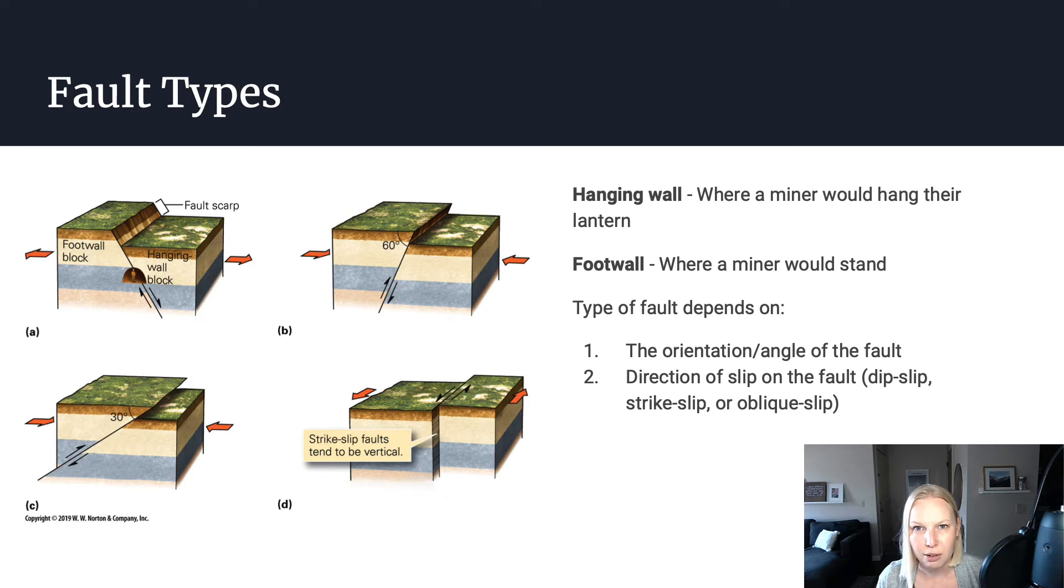But when we talk about faults, we usually talk about those two different pieces as being either the hanging wall or the foot wall. These terms are old mining terms from when miners dig underground. The word hanging wall refers to the block of rock above the miner where they would hang their lantern, and the foot wall is where the miner's feet would be, where they would be standing.